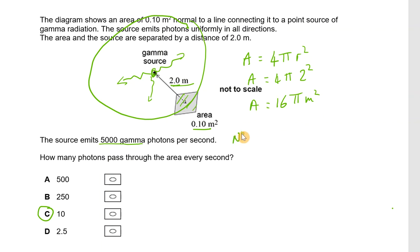Now, the number of photons that pass through this area is going to be that area of 0.1 metres over the total area of the sphere multiplied by the total number of photons that are being emitted each second.